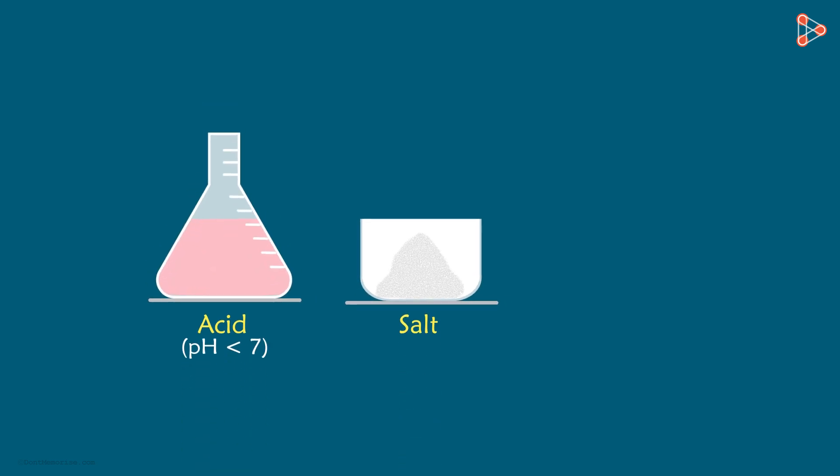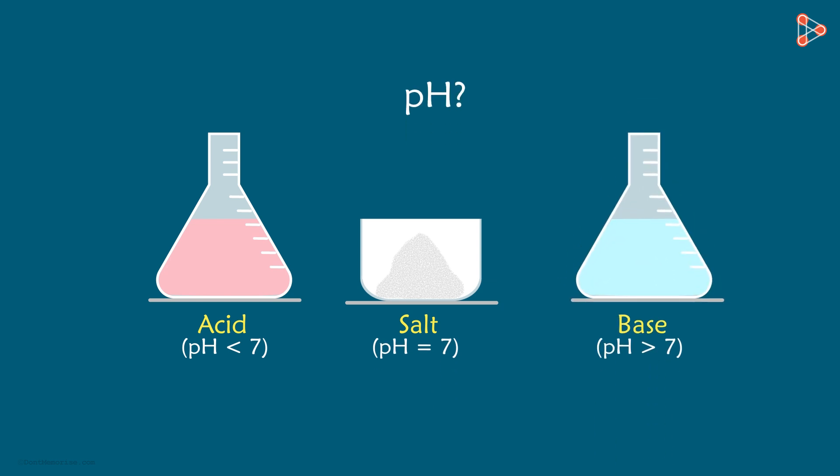All of us would probably know that the pH of acids is less than 7, that of salts is 7, and that of bases is more than 7. Do we really understand what pH is? Let's dive a bit deeper into this concept.